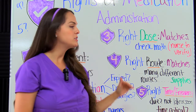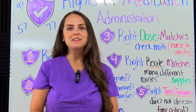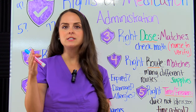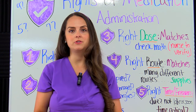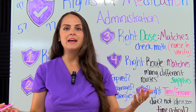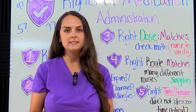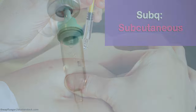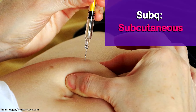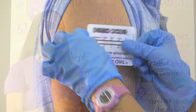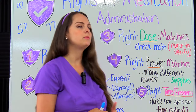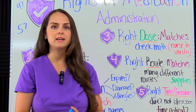Then we have the fourth right, which is the right route. Look at the order and pay close attention to the way this medication needs to be administered. Today we can give medications various ways: most commonly through the mouth, but also IV intravenously, subcutaneous in the fatty tissue, IM in the muscle, topically, and more. You want to make sure you have the right supplies for the route you need to use.